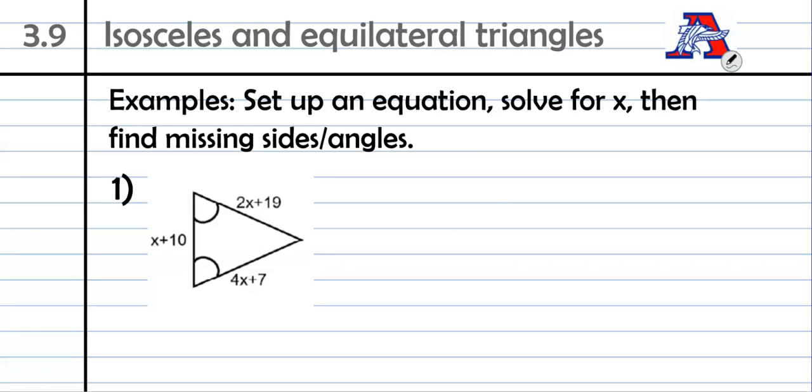So in these examples, same thing we've been doing. We're going to set up an equation, we're going to solve for x, and then we're going to plug it back in and see what else we can figure out. So in the diagram below, we have an isosceles triangle, so we know that this side and this side are congruent. We don't really know anything about this side yet, so we're going to ignore it.